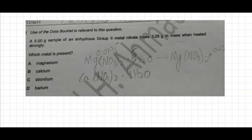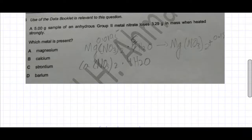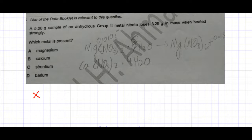So it's decomposing. A Group 2 metal nitrate is decomposing, so you can create a general equation for that reaction. You could have a Group 2 metal nitrate, so I've taken X as my Group 2 metal having a 2+ charge, so it's a Group 2 metal nitrate.